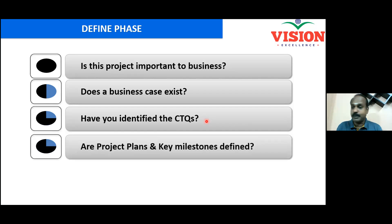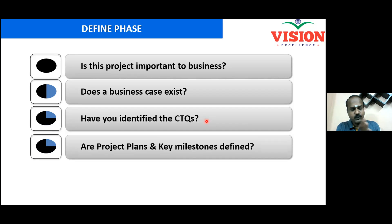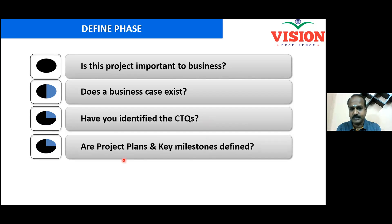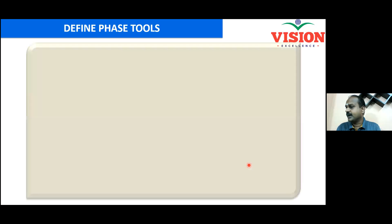Are project plans and key milestones identified? You said your project is for six months. What will you achieve at the end of six months? At the end of every month? At the end of every week? You must have a plan — project plan and key milestones. All these questions should have answers for your project to get approved by top management.